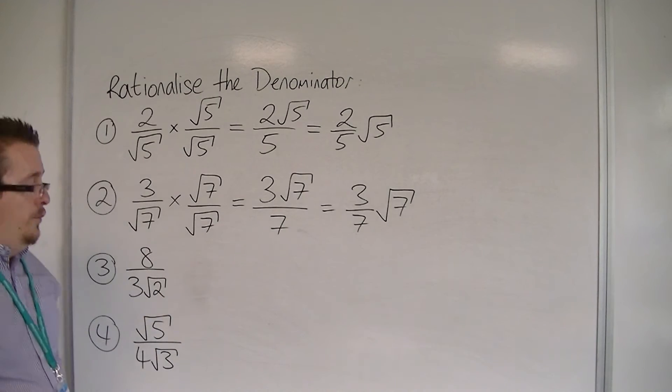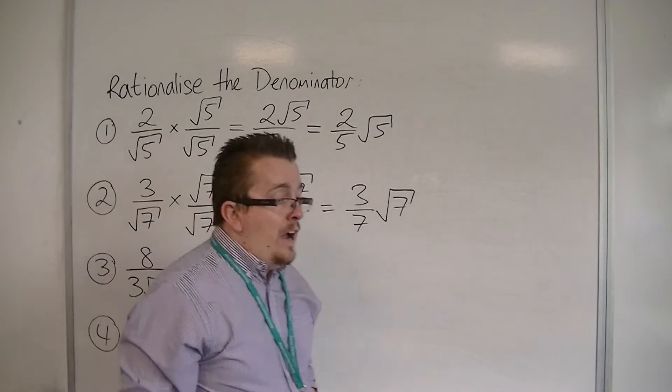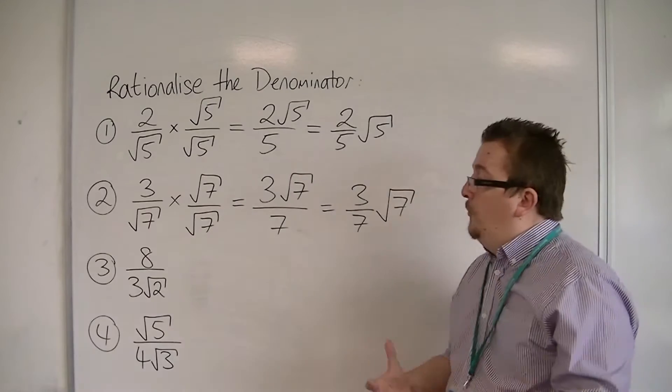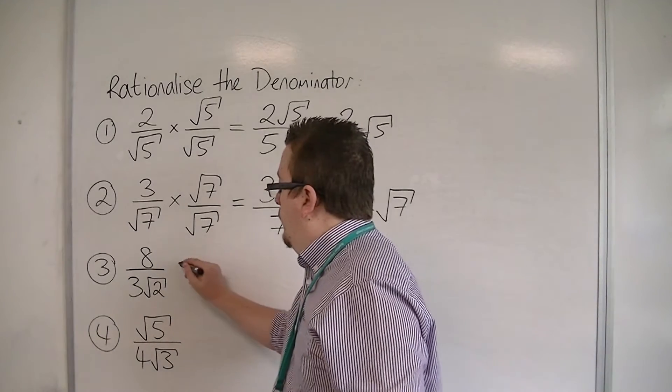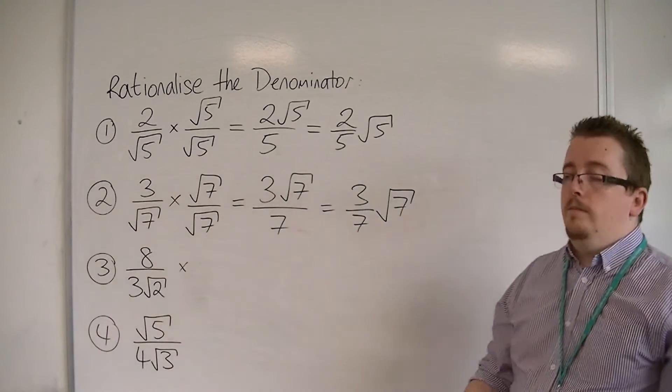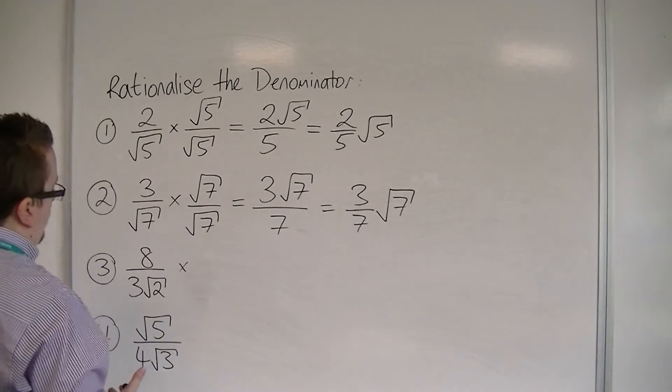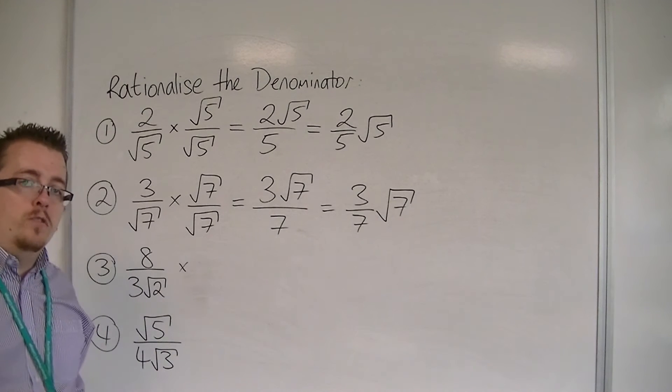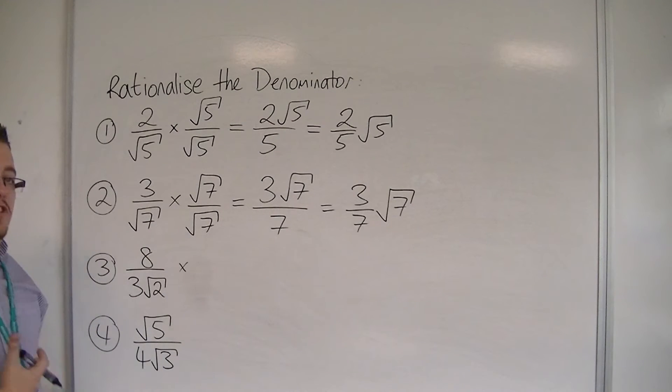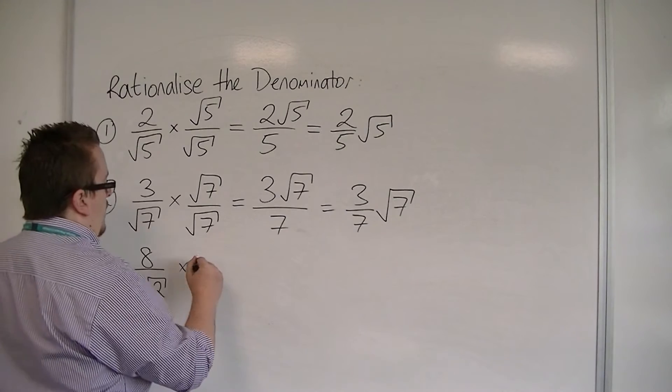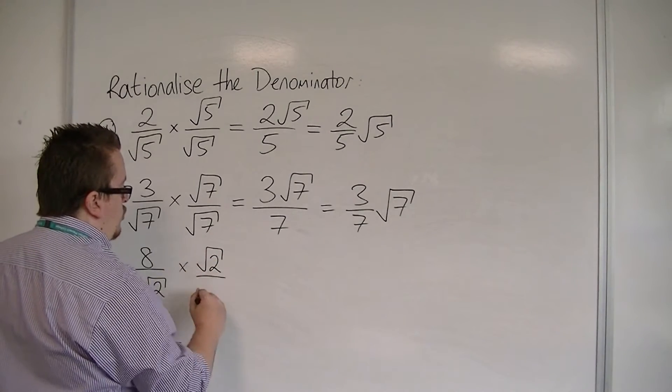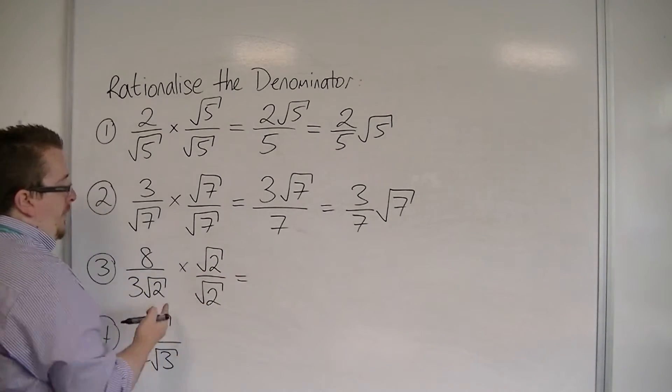Number 3, 8 over 3 root 2. You could multiply top and bottom by 3 root 2 over 3 root 2. However, what's going to happen there is it's just going to introduce some cancellation. So it's probably just easier to multiply top and bottom by root 2. That will do the job of getting rid of the surd in the denominator.